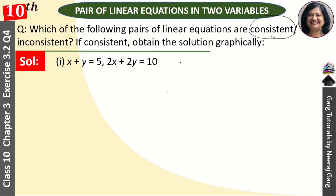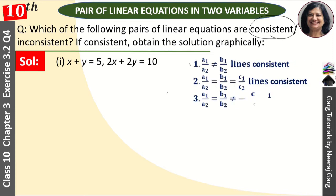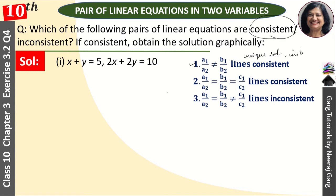Now we need to know the properties. For consistent lines: if a1 upon a2 is not equal to b1 upon b2, then the lines are consistent and the solution is unique — meaning there is a single solution. These are called intersecting lines.